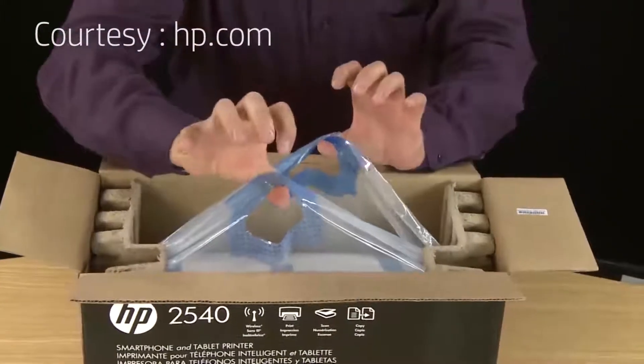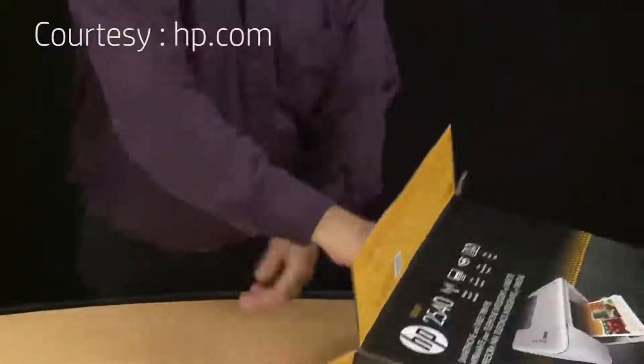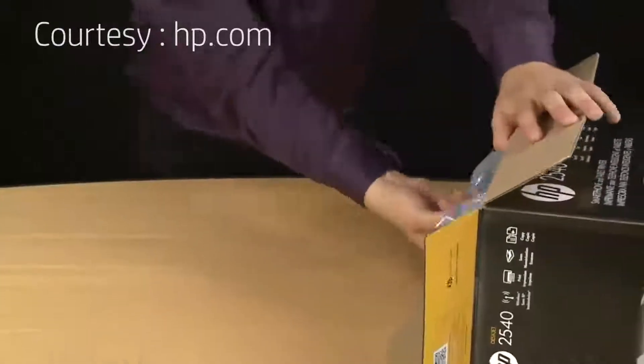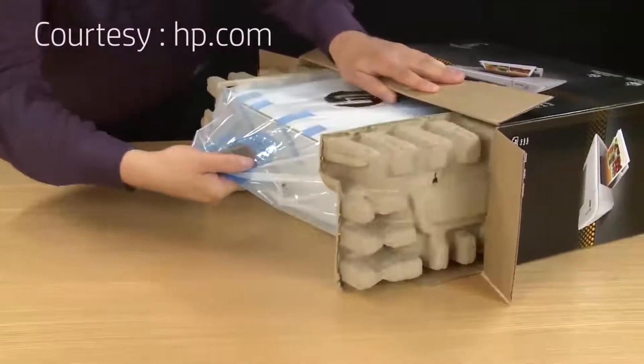HP provides a carrying bag for your printer which also helps you remove it from the box. Find the two handles that are on the top and then set the box on its side. Still holding those two handles, gently pull the printer out of the box.